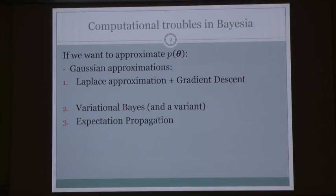Basically what happens is that Laplace is well understood, but variational Bayes and expectation propagation are a bit more poorly understood. Today I will show that these three are actually very closely linked.